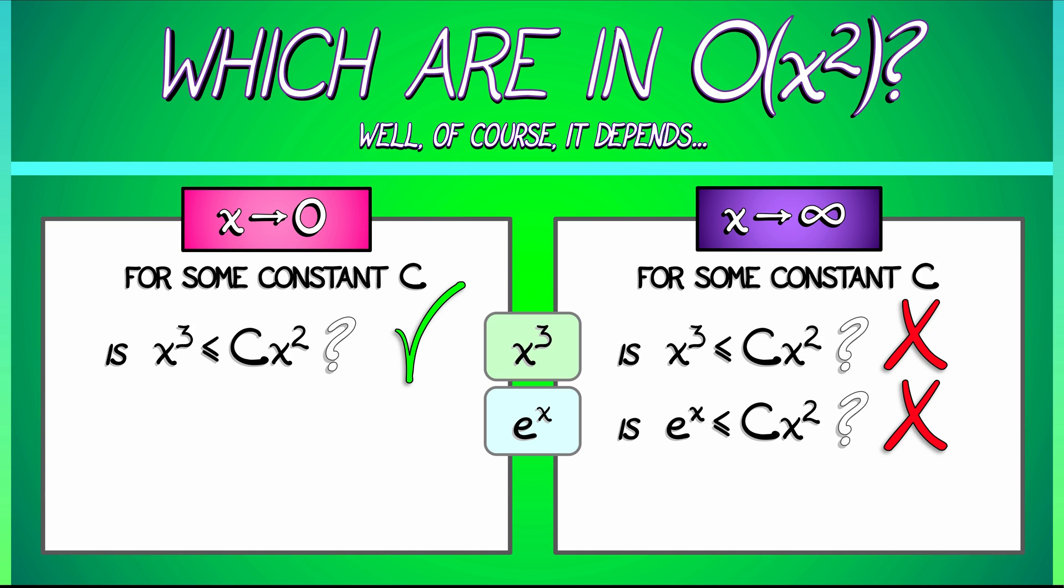However, what happens in the limit as x goes to zero? Well, let me think. x squared is going to zero, but e to the x is going to one. There's no way that there's some constant so that e to the x is less than that constant times x squared in the limit as x goes to zero. So, this function e to the x is not in big O of x squared as x goes to zero or as x goes to infinity.